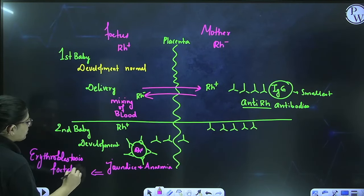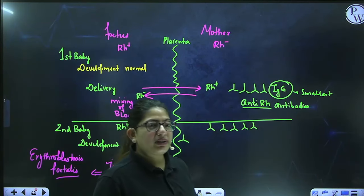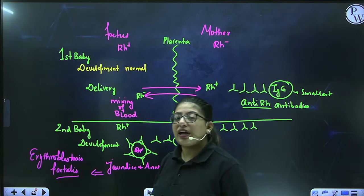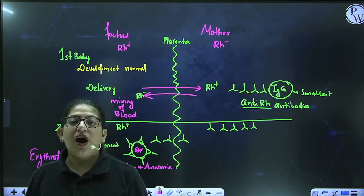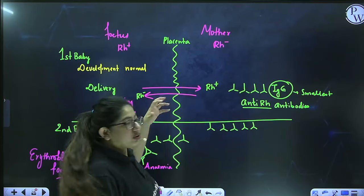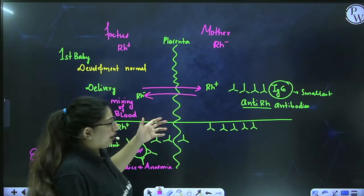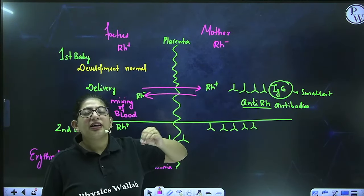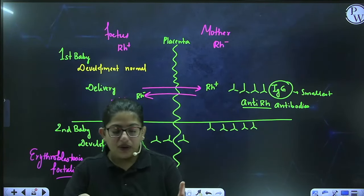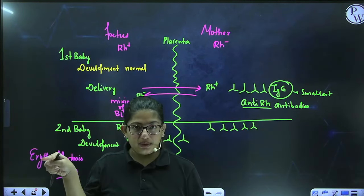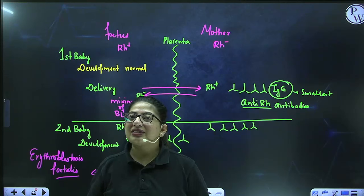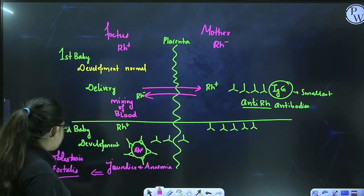A common exam question: in Rh incompatibility, the mother is always Rh negative and the fetus is always Rh positive. Erythroblastosis fetalis occurs to the second child, not the first. To prevent this disease, we can give the mother anti-Rh antibodies before delivery. These antibodies destroy any incoming Rh positive RBCs before the mother's immune system can recognize them and produce its own antibodies, thus preventing sensitization.